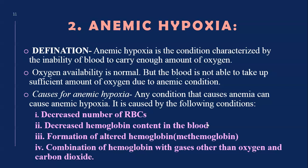The second type is anemic hypoxia. Anemic hypoxia is the condition characterized by the inability of blood to carry enough amount of oxygen. Oxygen availability is normal, but the blood is not able to take up a sufficient amount of oxygen because of anemia.